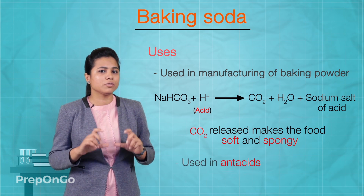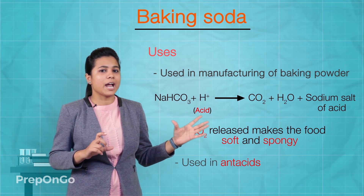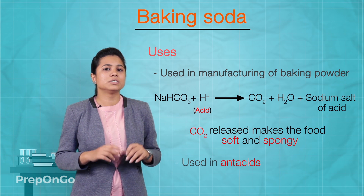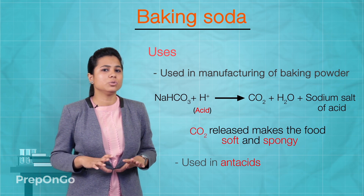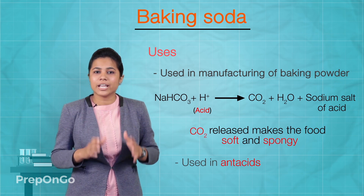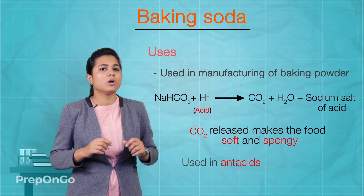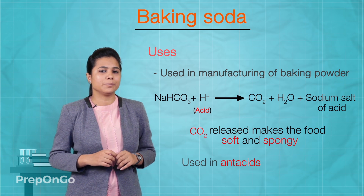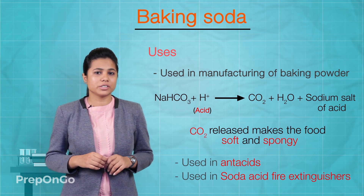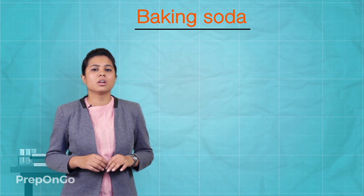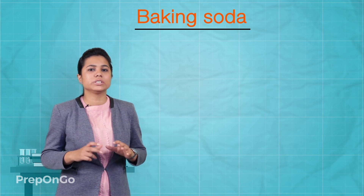Baking soda is also used as an antacid. Since it is a mild non-corrosive base, it is used in antacids — so next time you are suffering from acidity, you can use baking soda. It is also used as a soda-acid fire extinguisher. So, till now we have seen two salts which we use in our day-to-day life.